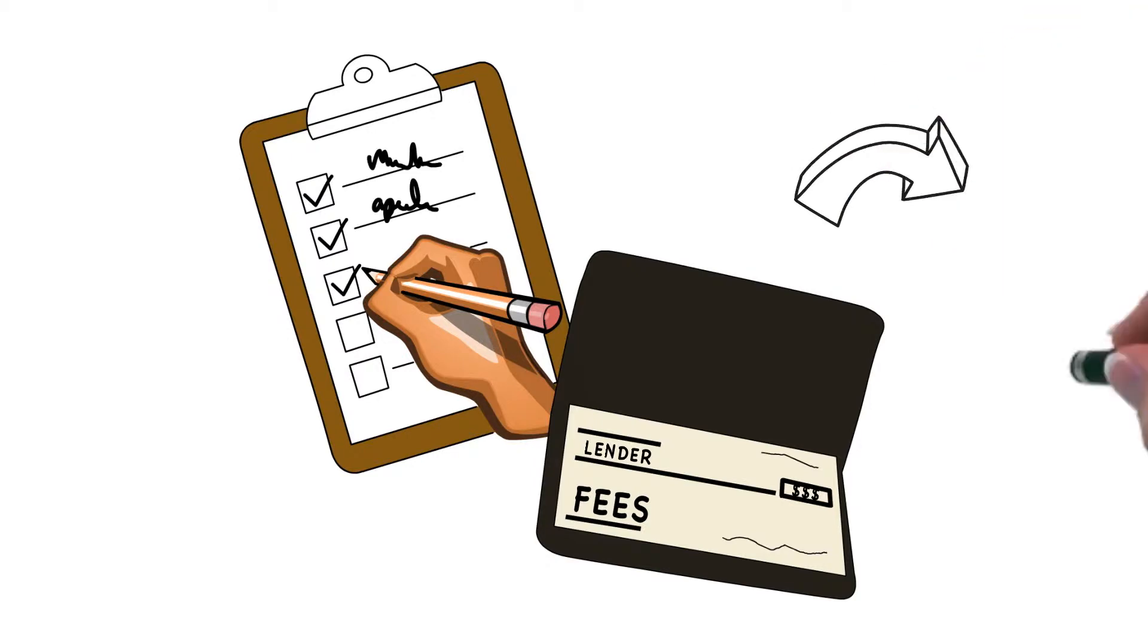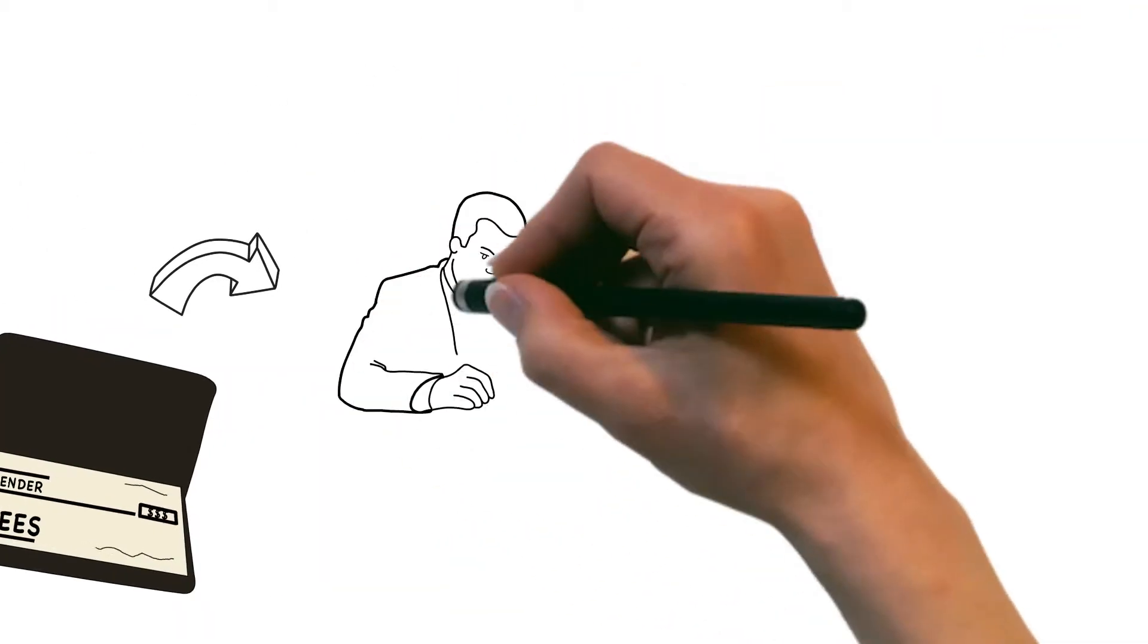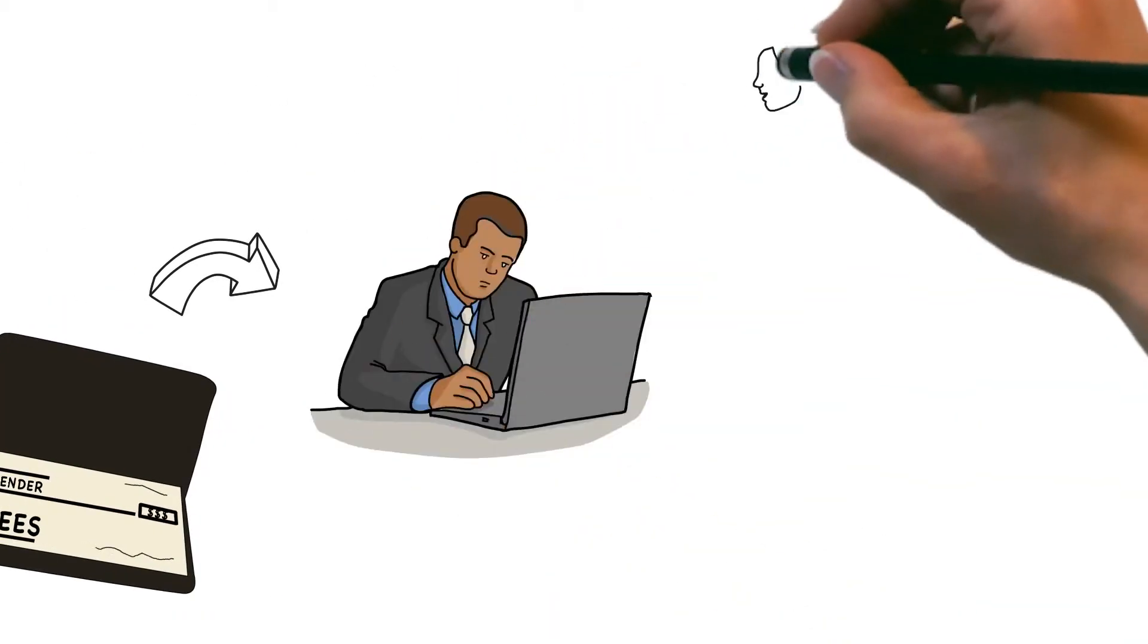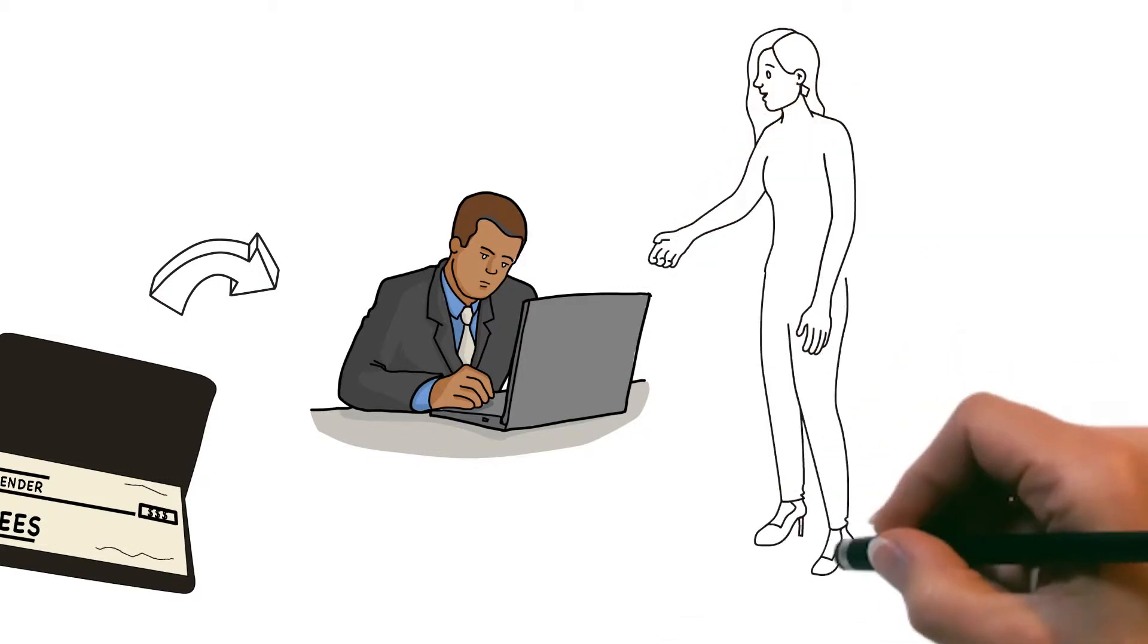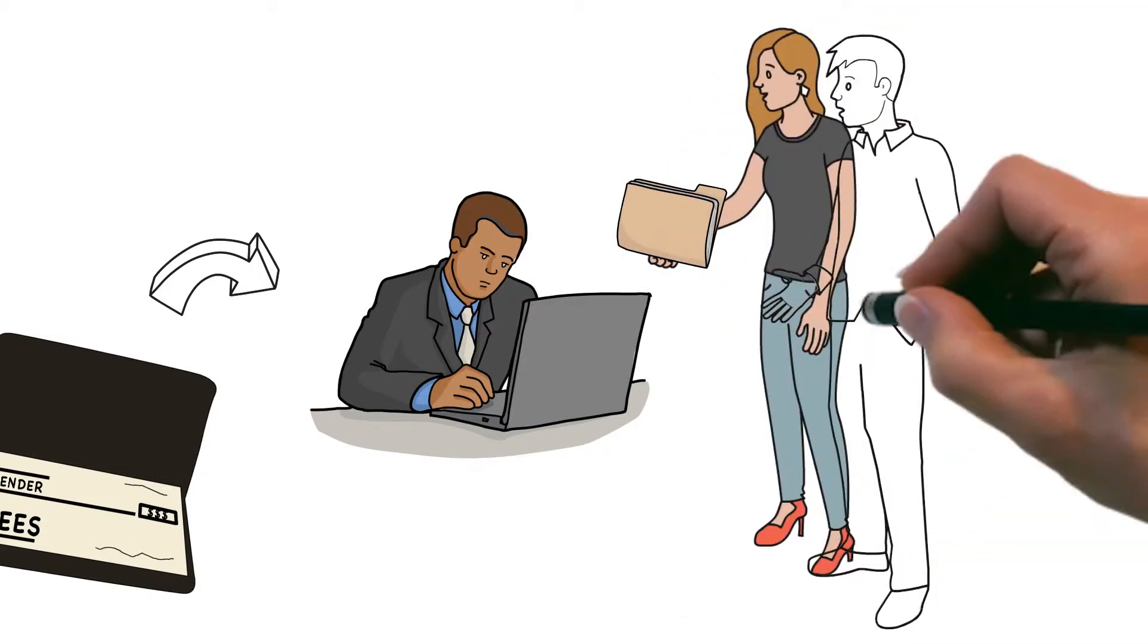Once you've made application, your loan officer will review your sales contract. You'll be asked to provide bank statements and information about your job and credit history and other financial information.